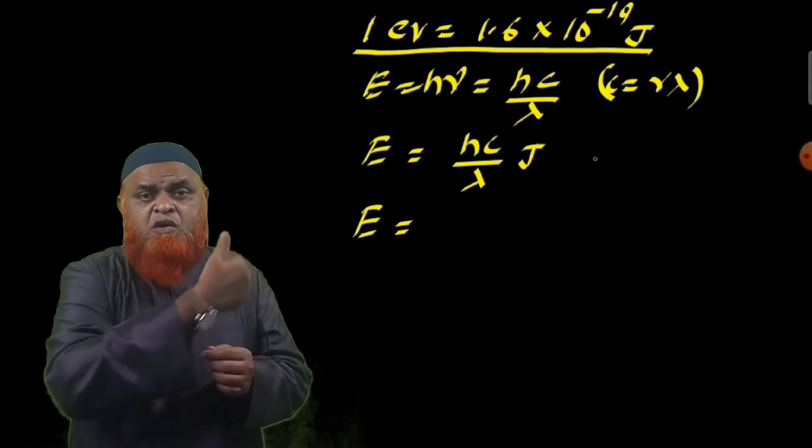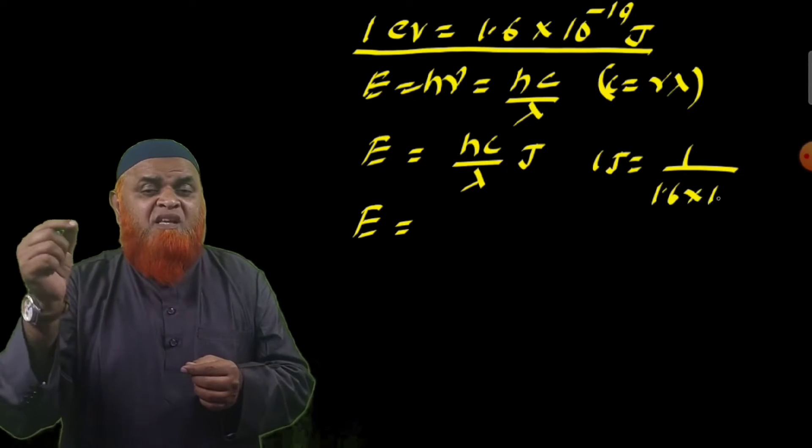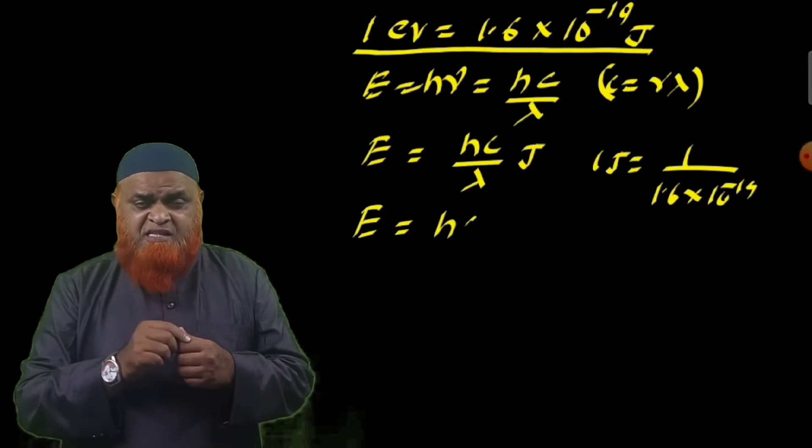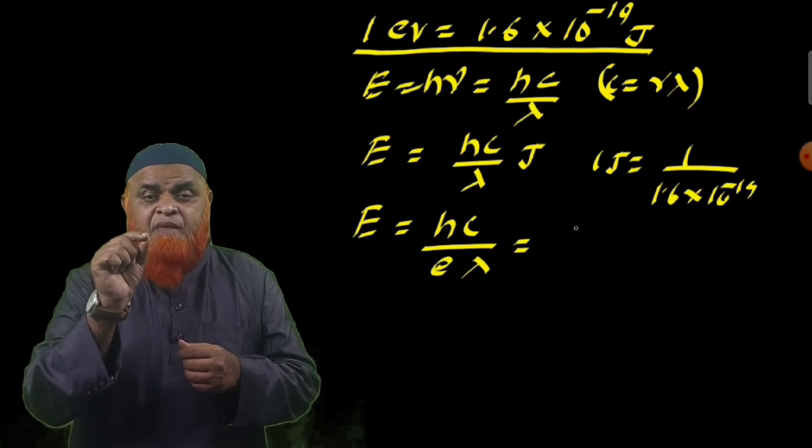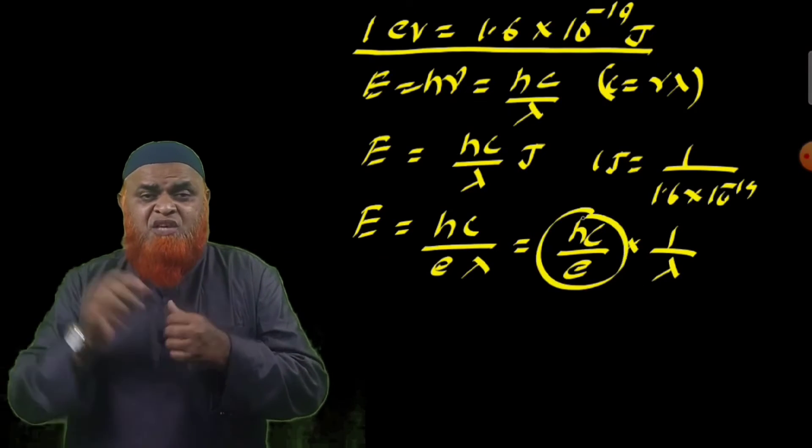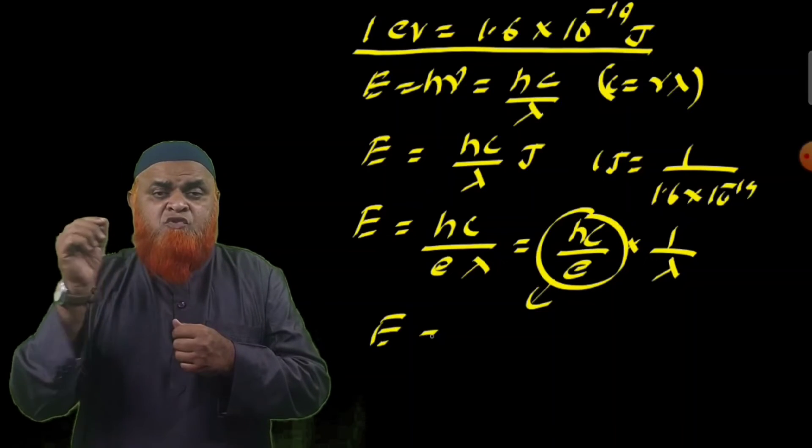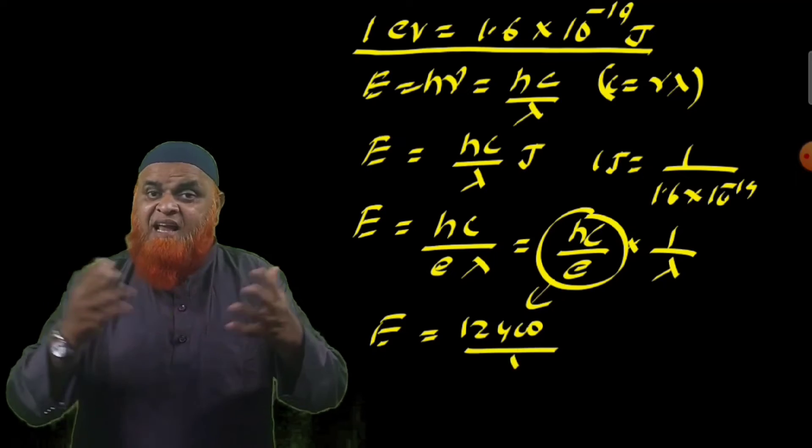So energy in joules, if you want to convert into electron volts, you have to divide by 1.6 times 10^-19. Then after that, hC by e is nothing but 12400. If you calculate it by substituting all the values, you will be getting 12400. And this 12400 by lambda, if you use directly, you will get the energy formula in terms of electron volts.